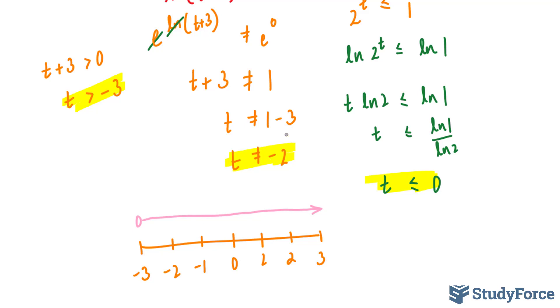Now, t cannot equal -2, so we're going to put a hollow circle right there. And lastly, t must be less than or equal to 0. So since it can be equal to 0, I'm going to use a solid circle here, and it's going to go in this direction.